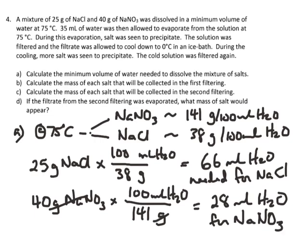So how much water do we actually need to dissolve both salts? It takes 66 mils to dissolve the sodium chloride, but only 28 mils to dissolve the sodium nitrate. If we used 66 mils — the larger volume of water — we'd have enough water to dissolve both salts. Definitely the sodium chloride will dissolve, and since we only needed 28 mils to dissolve the sodium nitrate, it would also dissolve in 66 mils. So the answer to Part A — the minimum volume of water needed — is 66 mils.